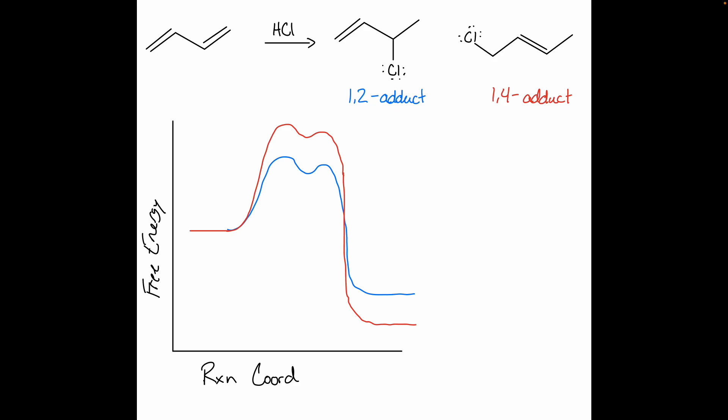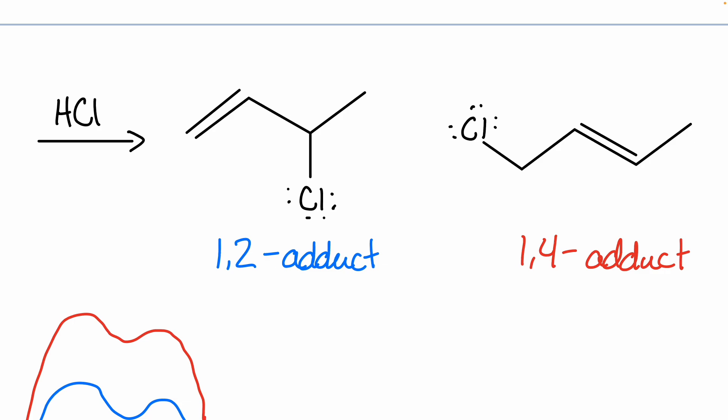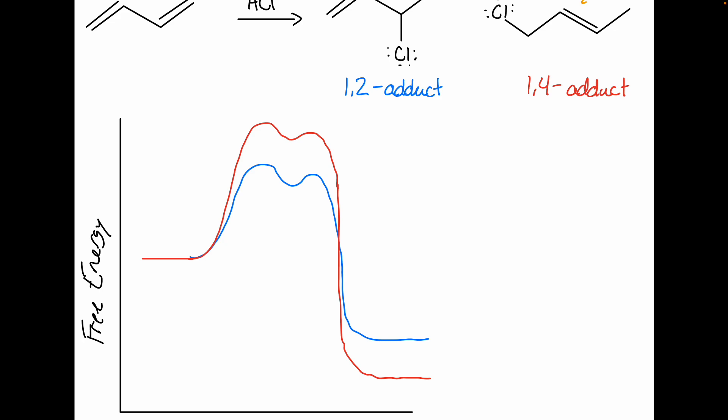The 1,4 product is more stable because it has a more substituted alkene — it's a disubstituted alkene, whereas the 1,2 product is only monosubstituted. So there's a push-pull: the 1,2 forms faster, but the 1,4 is more stable. This explains our temperature control: the kinetic product (1,2) is favored at low temperatures, while the thermodynamic product (1,4) is favored at high temperatures.